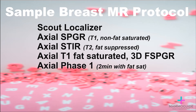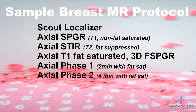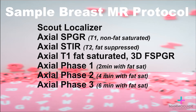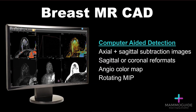This is followed by phase 1, which is usually done around 2 minutes. Fat saturation is performed for all contrast-enhanced sequences. Axial phase 2 is done at 4 minutes after contrast administration, and phase 3 at 6 minutes after contrast administration. This can be followed by a sagittal high-resolution post-contrast image, approximately 8 minutes after contrast injection. You also have several options for evaluating the images using computer-aided detection.